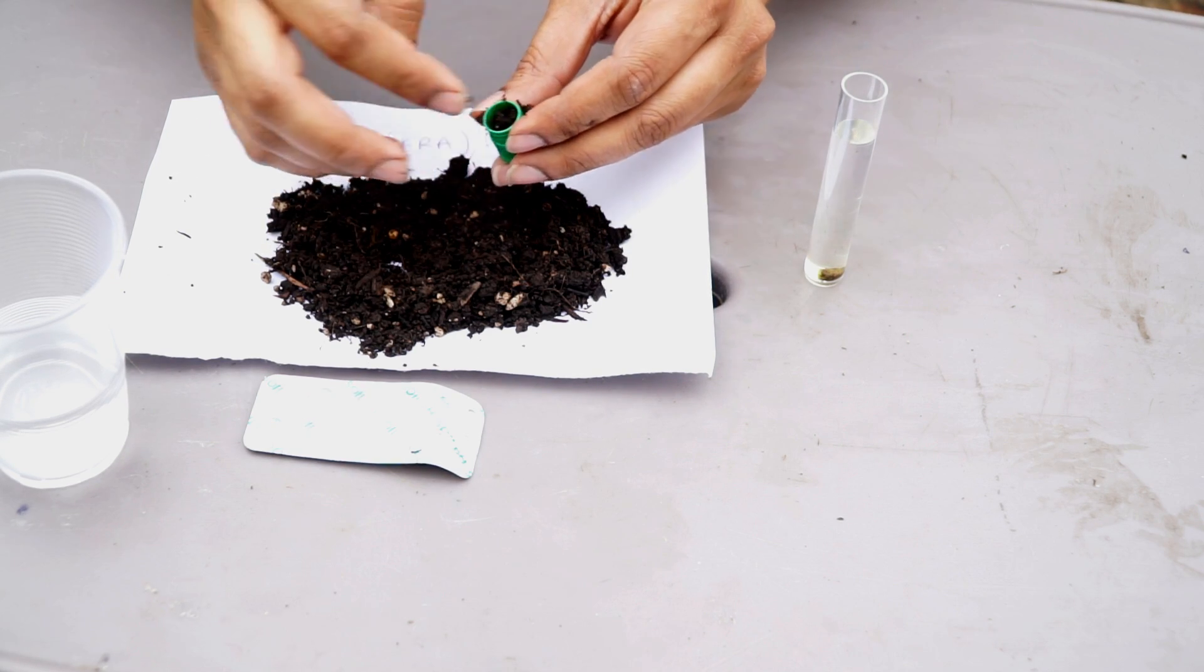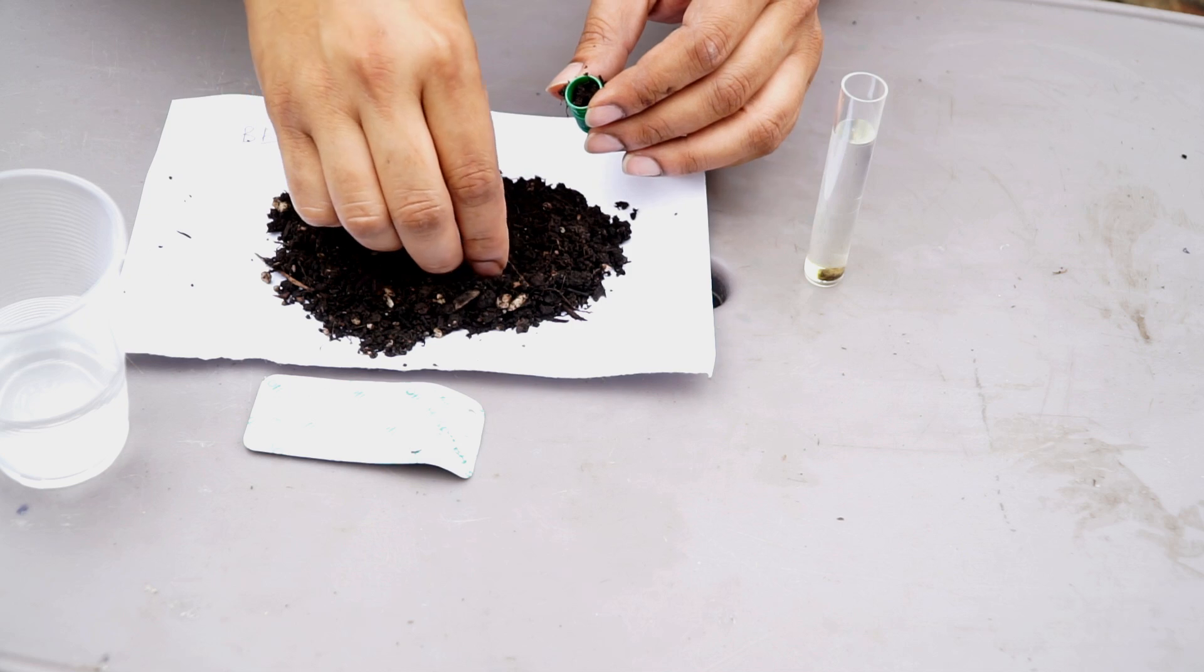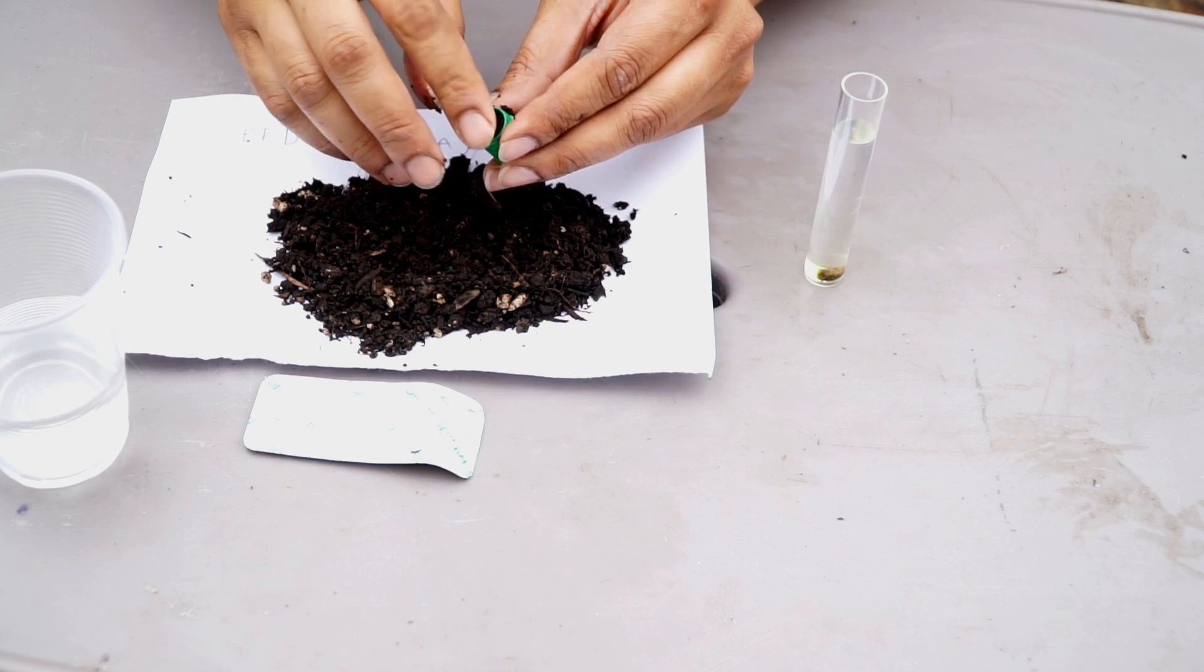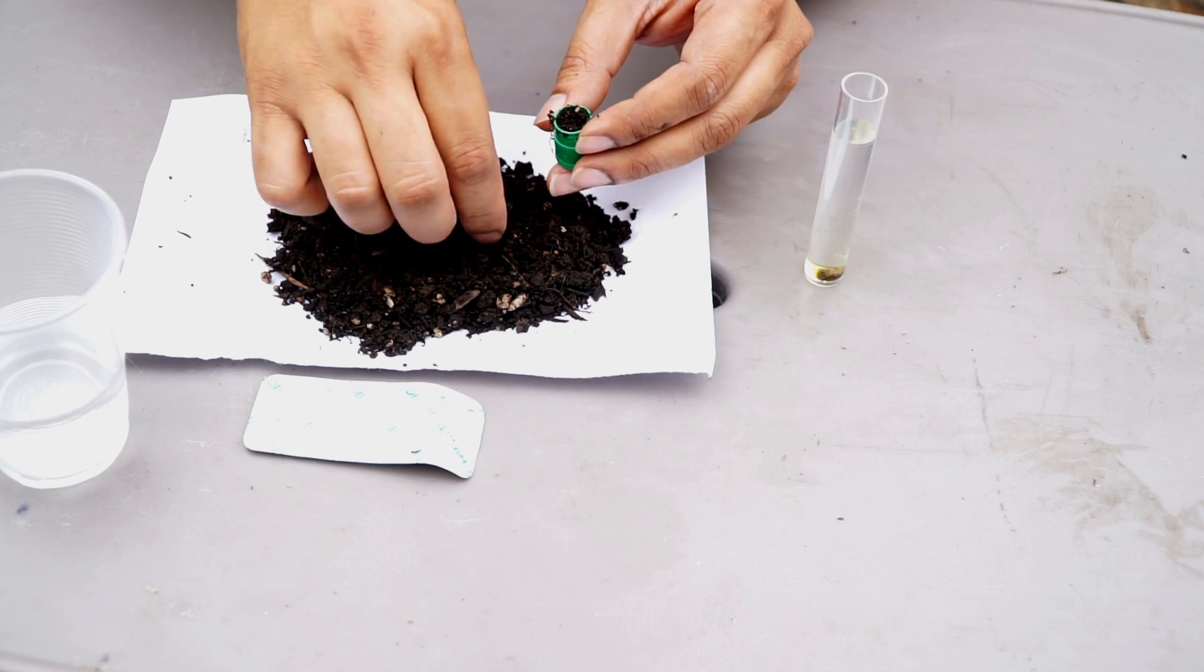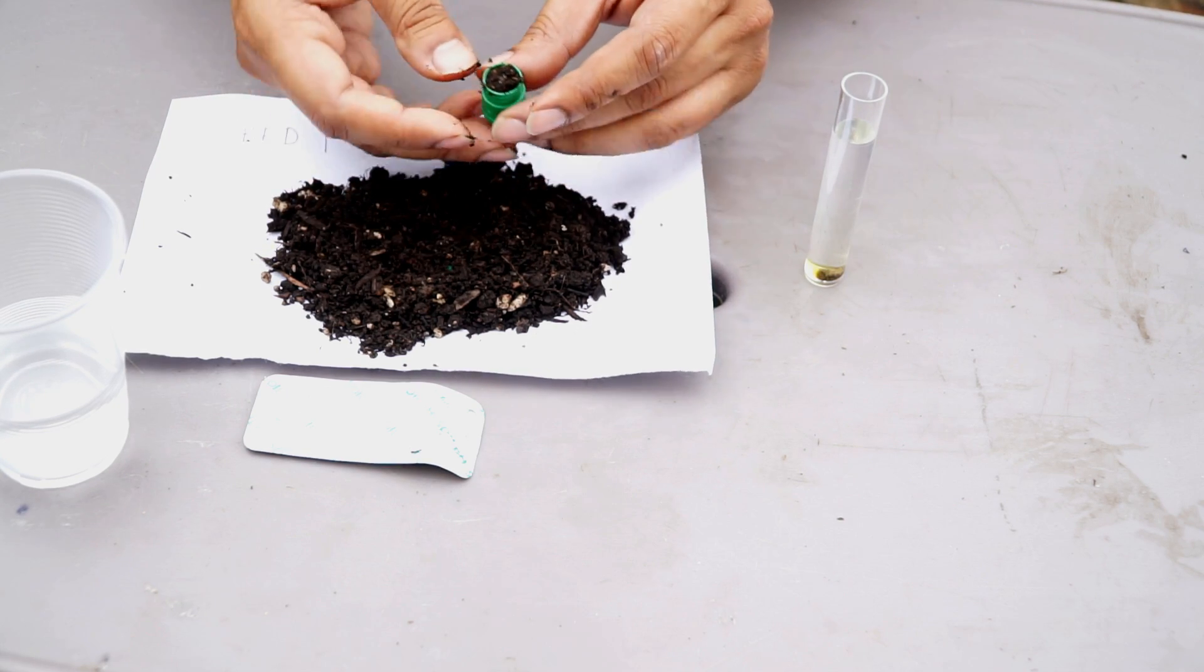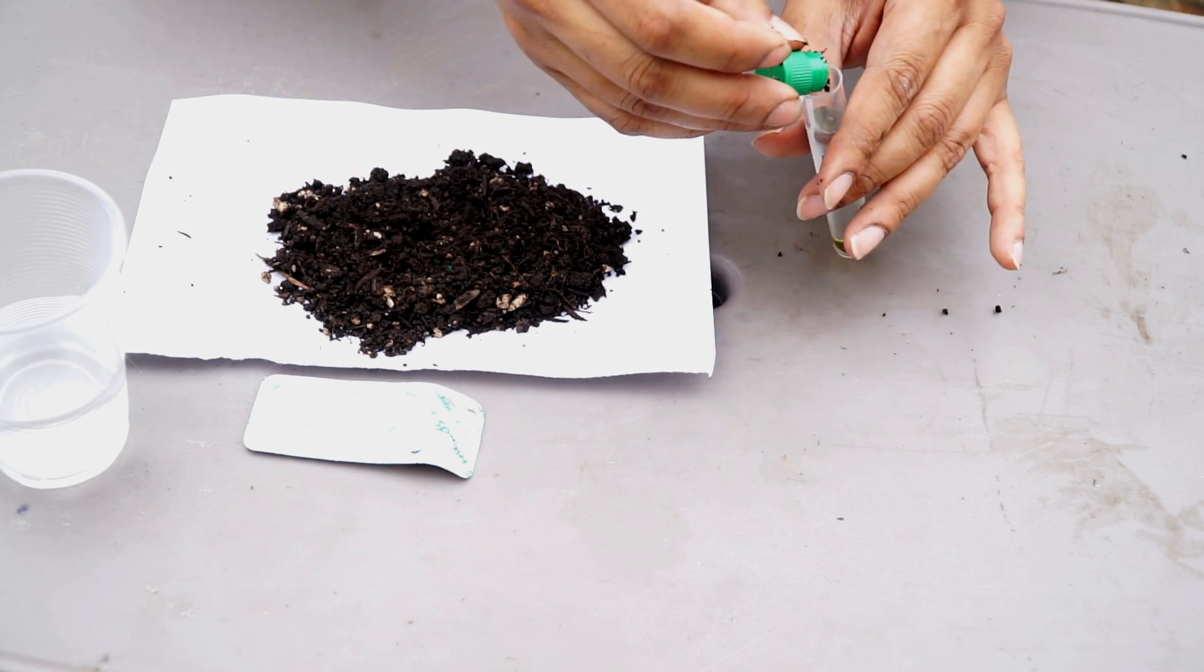When you're choosing the soil or when you're adding the soil, just make sure you don't add any wood chips or large particles. If you wish you could sift the soil, which means that you remove the large particles and only use the fine particles.